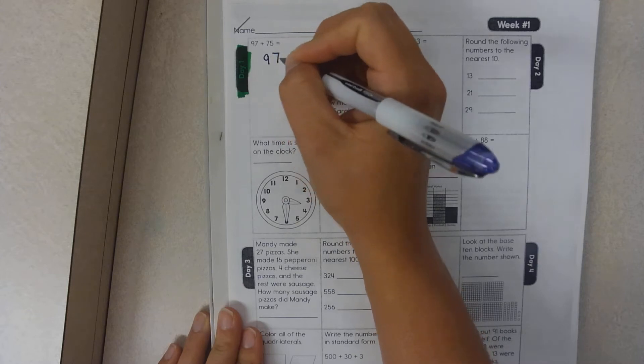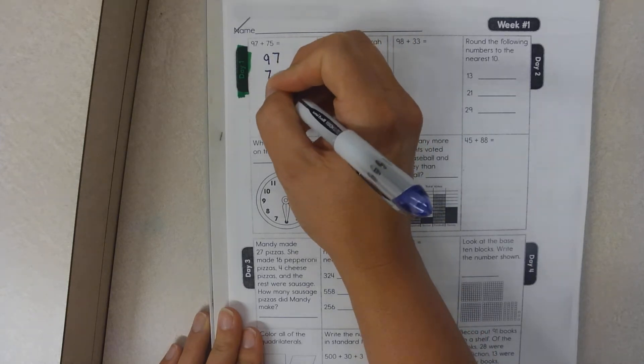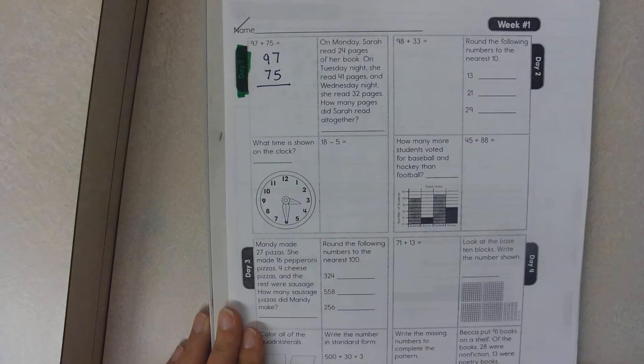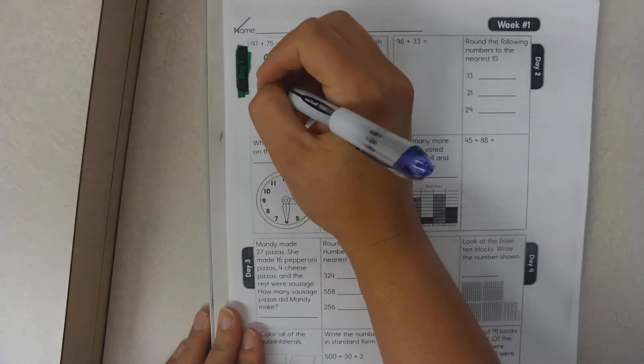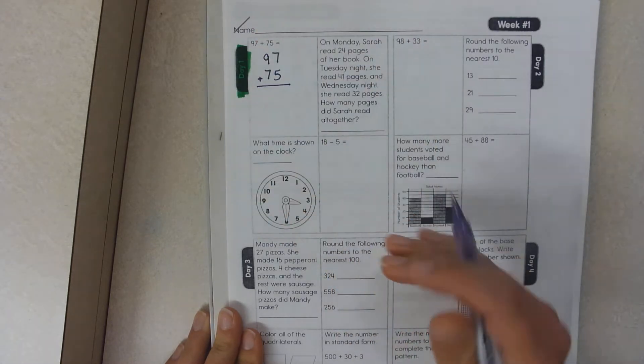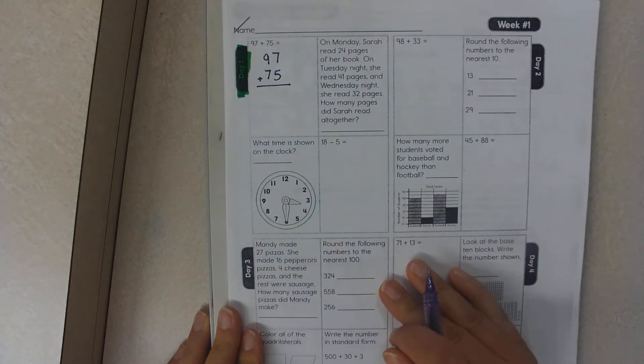The first question is 97 plus 75. Some kids are very good at doing addition in their heads. I'm going to ask that you do not do this in your head.